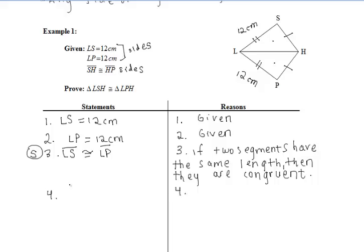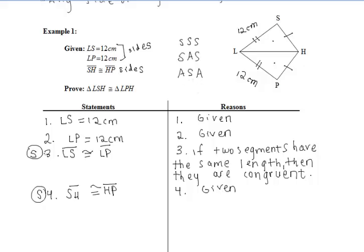We're also given that segment SH is congruent to HP, which gives us another pair of congruent sides. Thinking back to the three methods — SSS, SAS, ASA — since we already have two pairs of congruent sides, we're likely not going to use ASA. Now we need to find a third pair of congruent sides or a congruent angle.